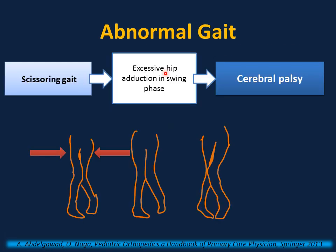Scissoring gait is excessive hip adduction during the swing phase, causing the knees and thighs to hit or cross. This is commonly associated with cerebral palsy in patients who have spasticity and contracture of the hip adductors.